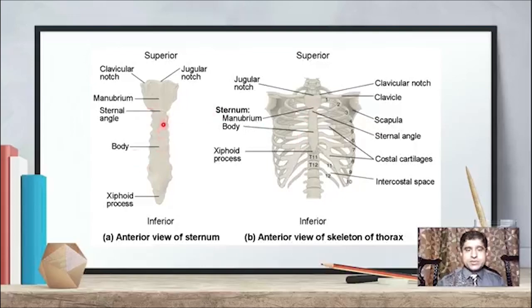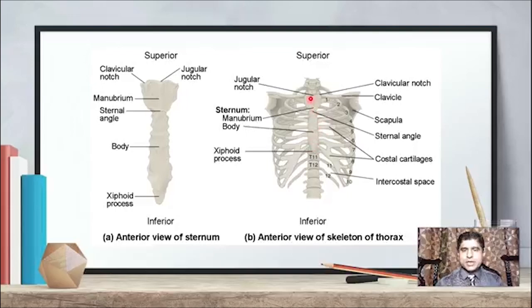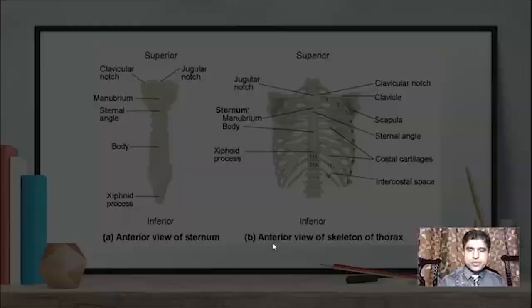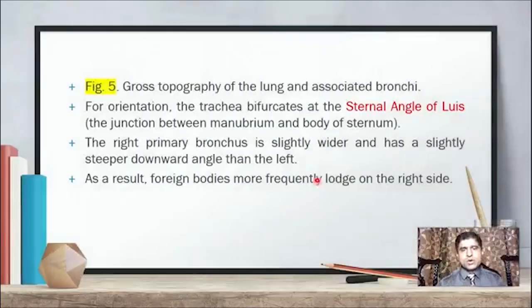The body of the sternum and the xiphoid process are also visible. The jugular notch is here. The ribs attach at the sides; during surgery the sternum is cut down the middle rather than cutting ribs, dividing it into two halves for heart or lung operations. Returning to the figure showing orientation, the right bronchus has a slightly steeper downward angle than the left.